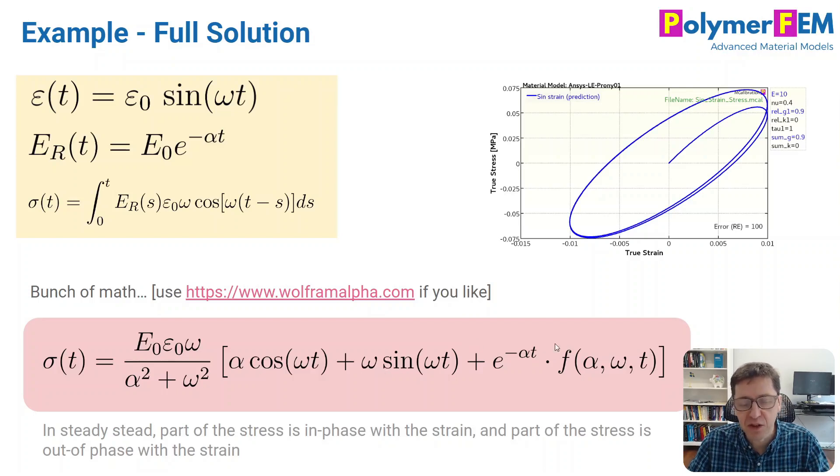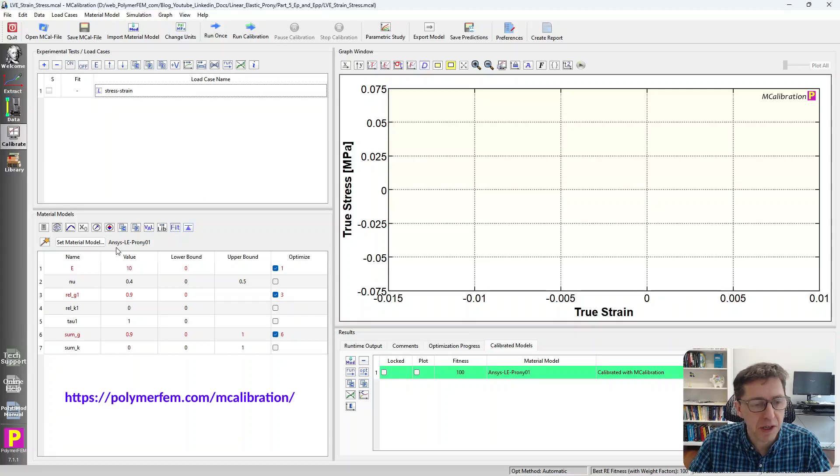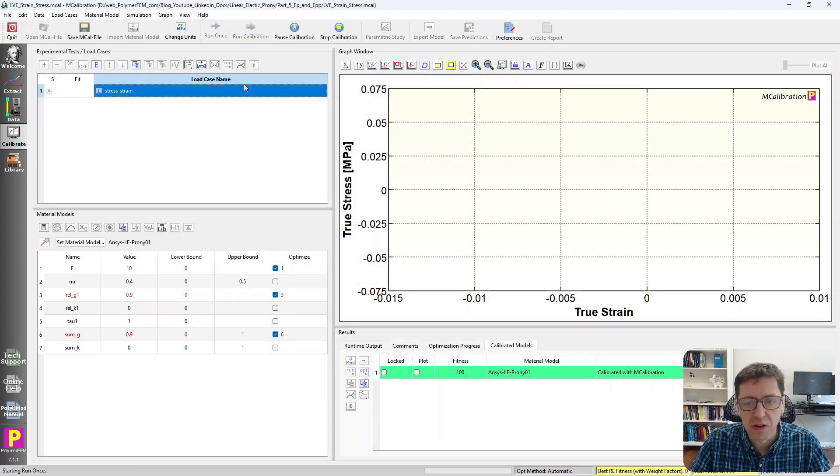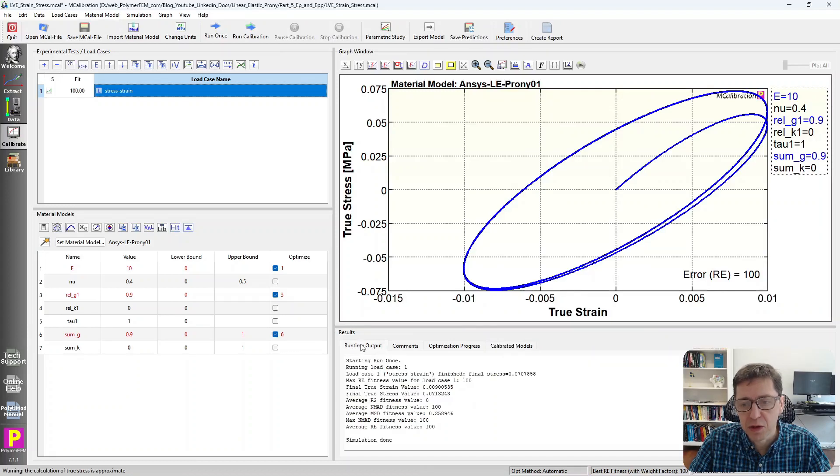So to look at this decaying function a little bit, we can use MCalibration. So here is the window of MCalibration. I have set an ANSYS linear elastic Prony series with one term, and here are the Young's modulus and the relaxation modulus, and I basically created a sinusoidal strain history like this, and if you click on that, this is what it would look like. So the stress goes around like that.